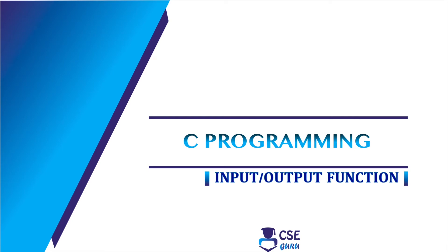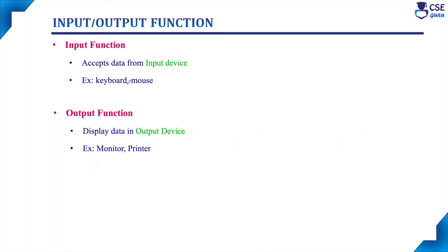Welcome to CSE Vroom. In this session we will discuss input and output functions in C. Two main functions the programmer needs to write C code to interact with the computer: one is the input function and another one is the output function.